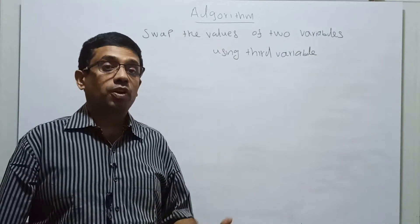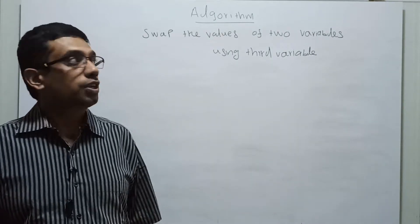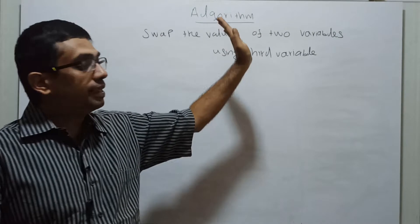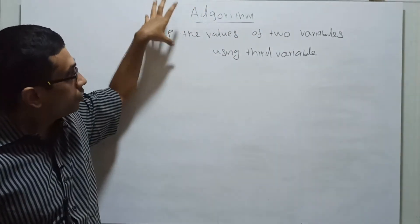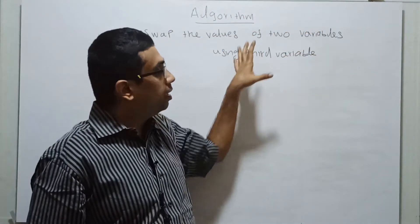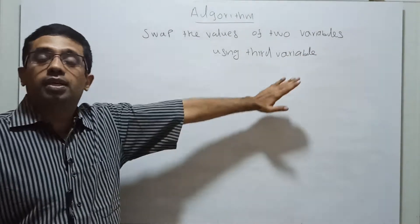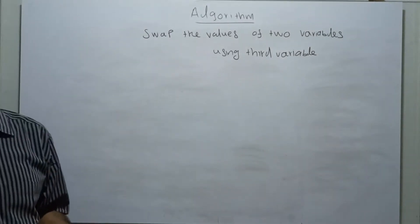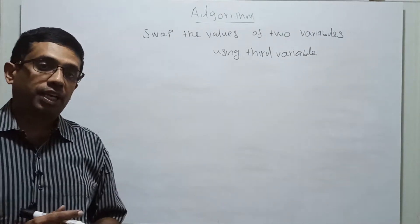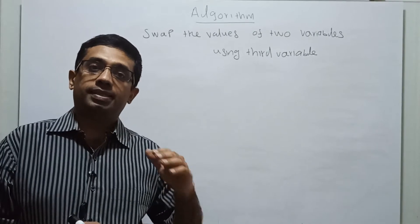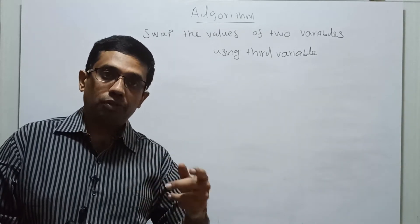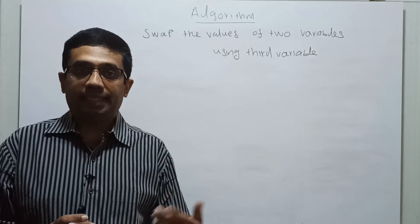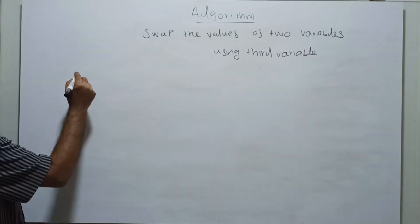Welcome to the video lecture on swapping the values of two variables using a third variable. We need to write an algorithm to swap values using a temporary variable. I will have two input variables n1 and n2, and a third temporary variable which I will call t — t stands for temp.